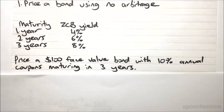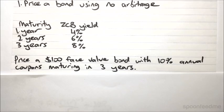And we want a $110 face value zero-coupon bond with a three-year maturity. If we have all of those, then we've completely replicated the cash flows, and so the prices of those zero-coupon bonds combined should give us the price of the bond.